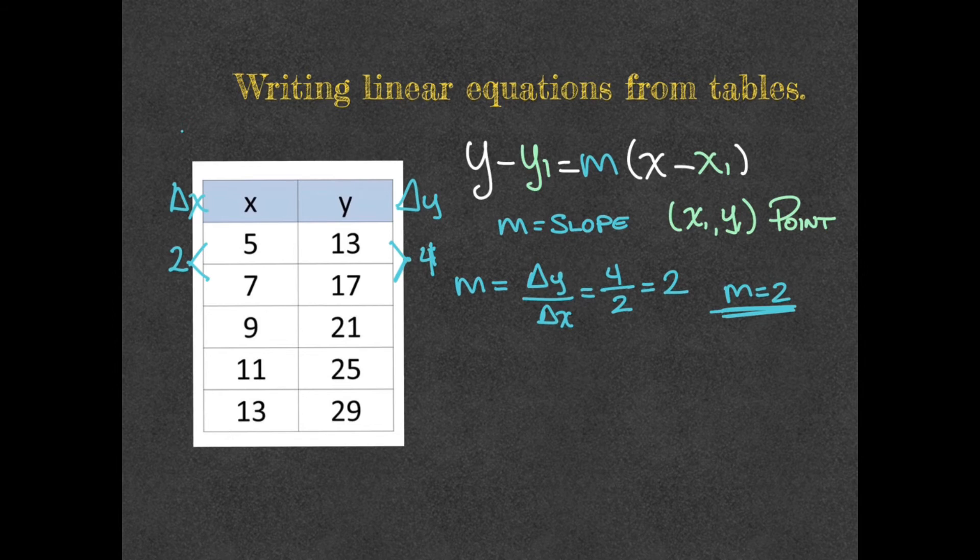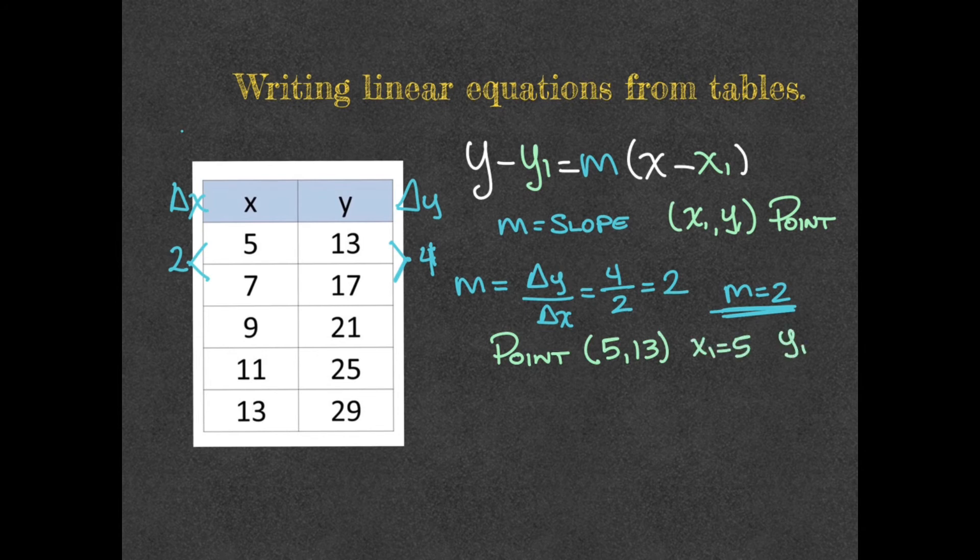Now, like I was saying, I'm going to use a point. In this case, I can use any of those points, but to make it easier for myself, I'm going to pick the x and y values that are smaller. The point that has the smallest one will be this one, 5 comma 13. So the point that we're going to use is going to be 5, 13, meaning my x1 equals 5, my y1 equals 13. So now I'm ready to start substituting.